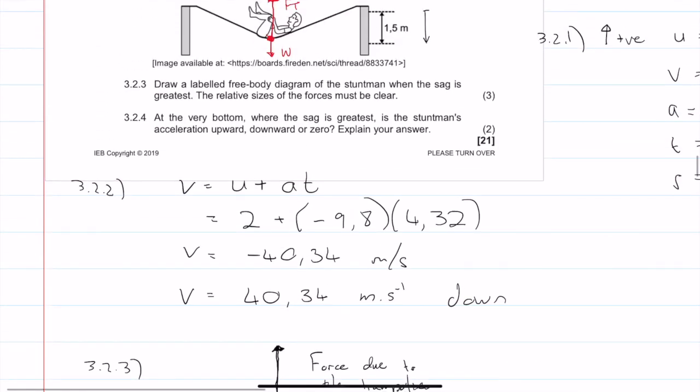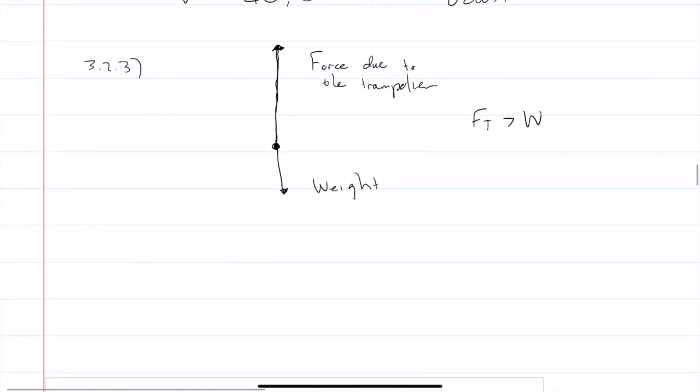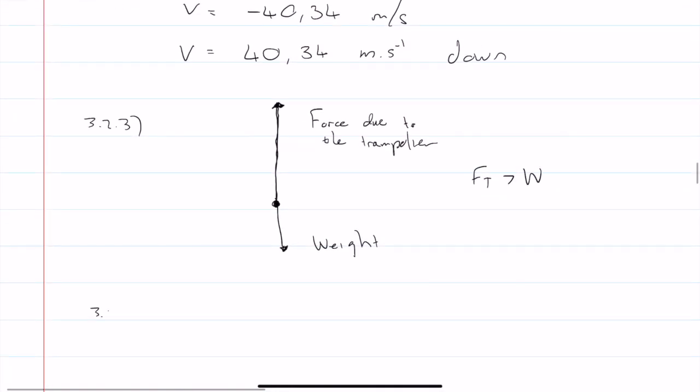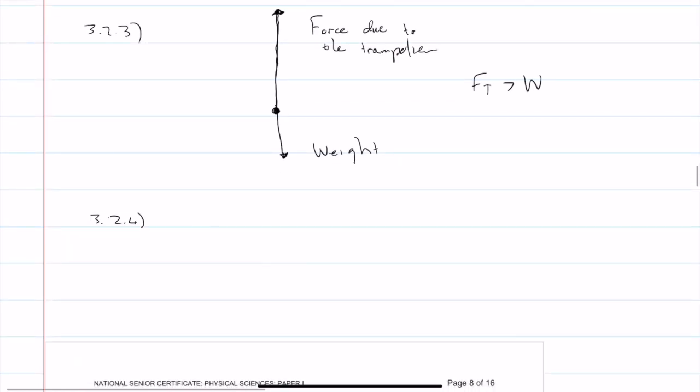So if we write this out, we're going to say force of tension upwards, taking up as positive. Force of the trampoline minus weight equals mass times acceleration. We can divide everything by the mass, and we know that this number here is a positive number because of that constraint right there. So acceleration must be upwards. Acceleration is positive.